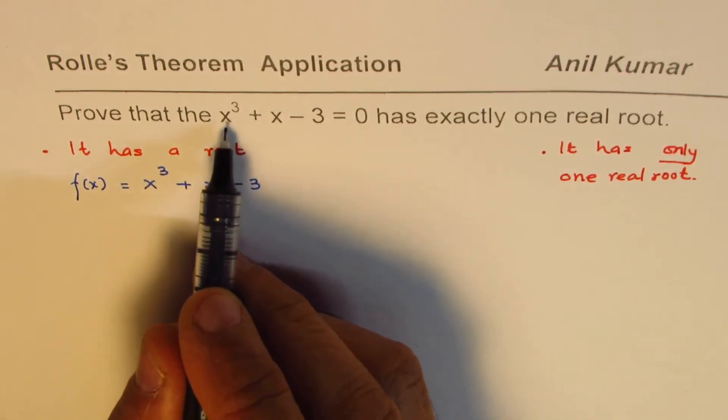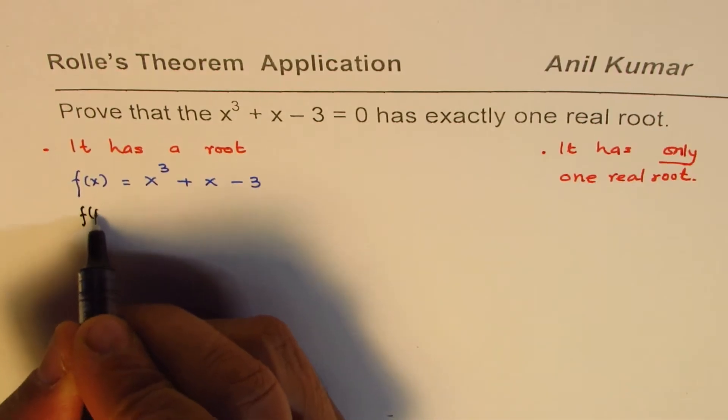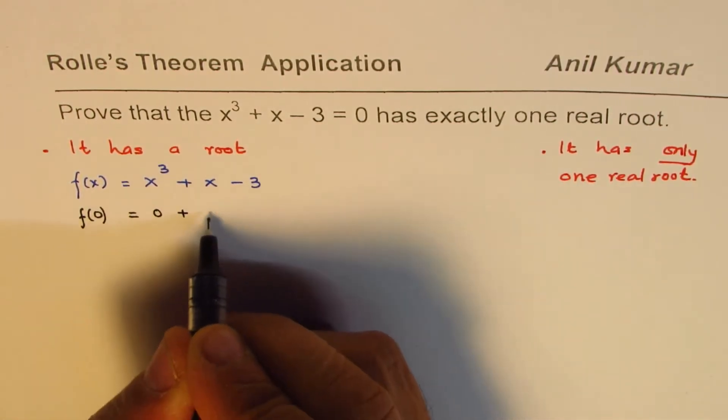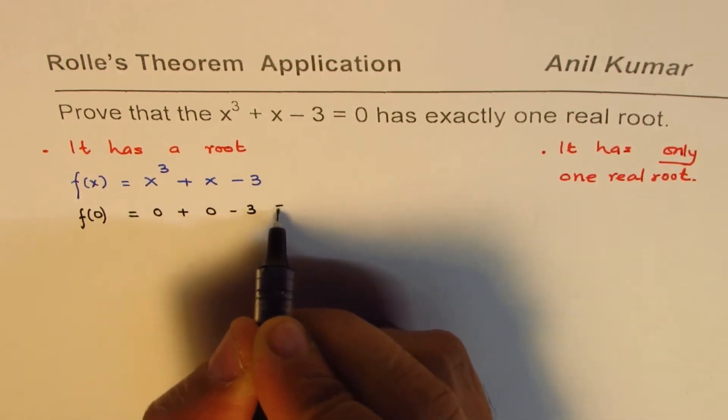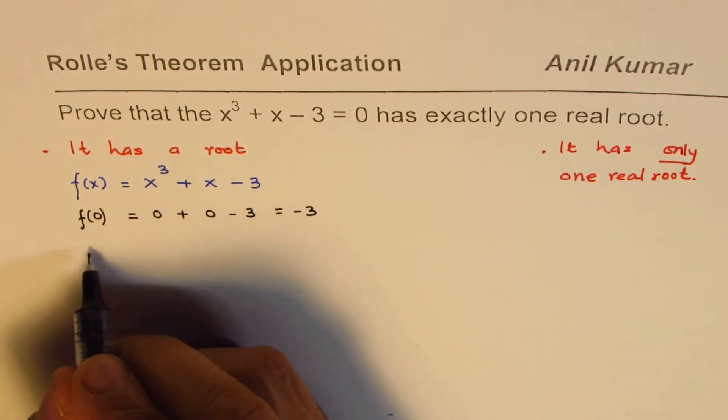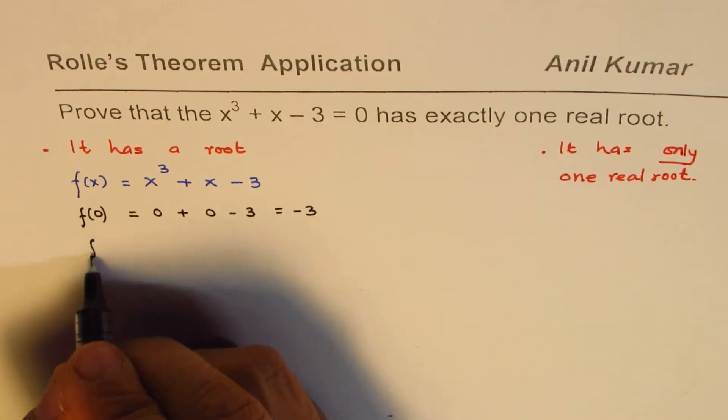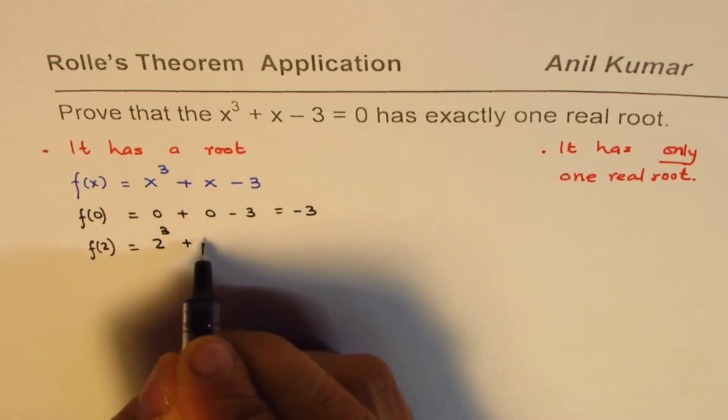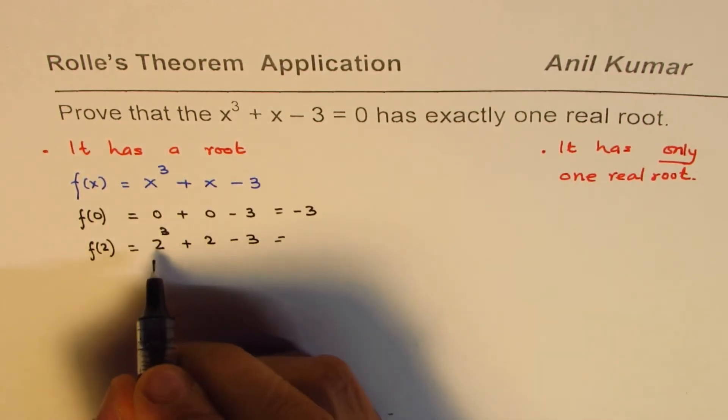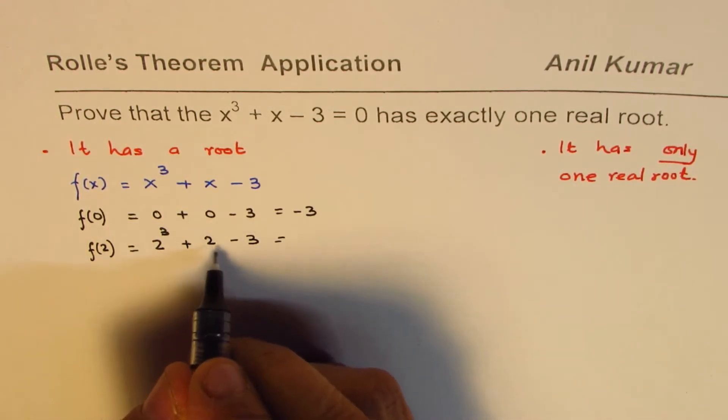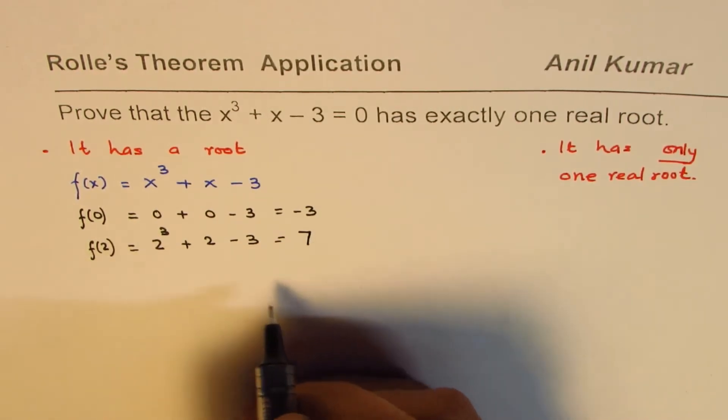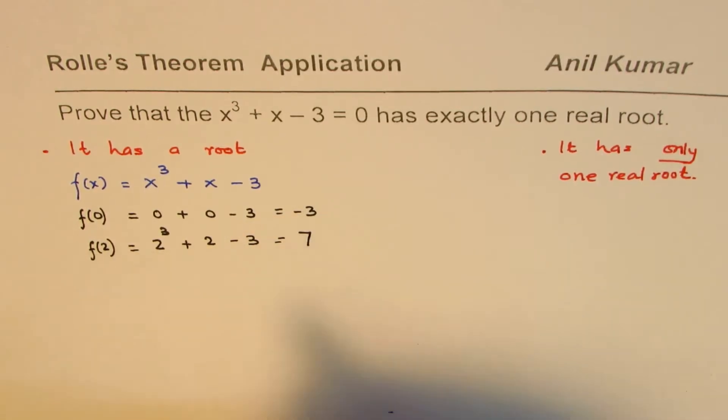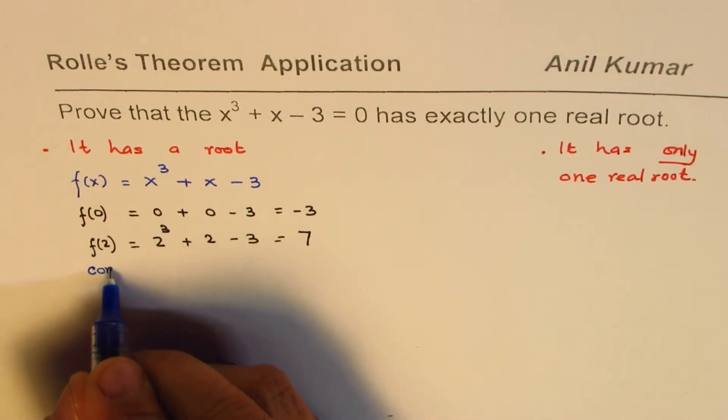So if I place f(0), if I write 0 for x, I get 0 plus 0 minus 3, so we get a negative 3 value. And if I write f of 2, I get 2 cubed plus 2 minus 3, which is 8 plus 2, 10, minus 3 is plus 7. So what we notice here is that the value changes from minus 3 to 7. We know it's a polynomial, which is continuous.